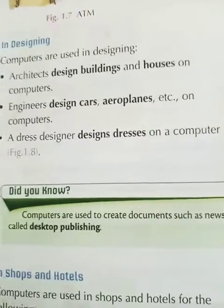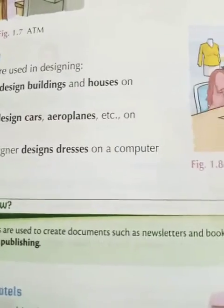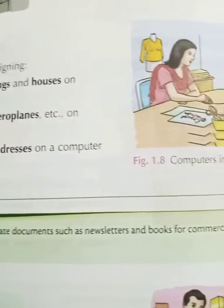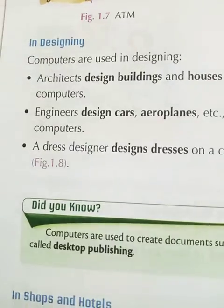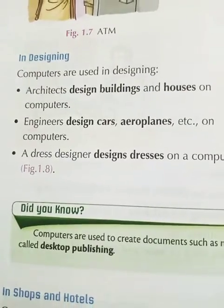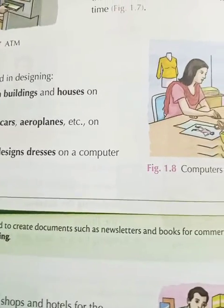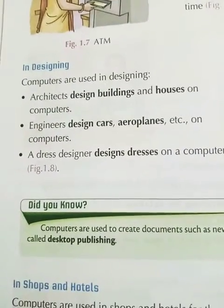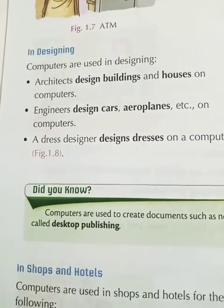Now let's read this. Did you know: computers are used to create documents such as newsletters and books for commercial printing. This is called desktop publishing. So newsletters and books that need to be commercially printed — computers are used for that.